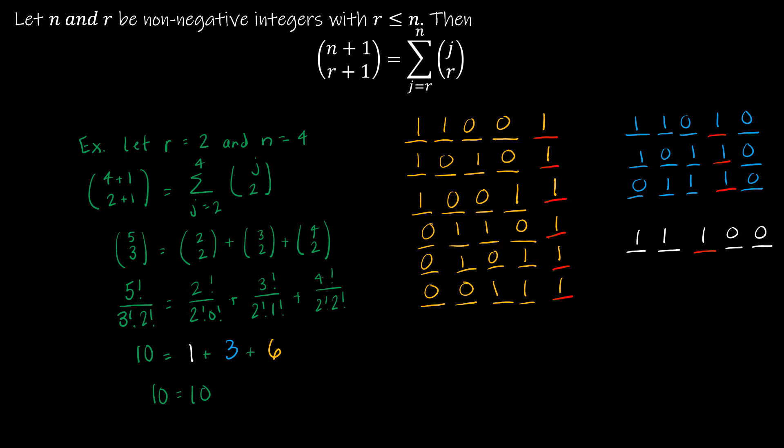For the second identity or last identity that it talks about in your textbook, again, I'm not going to go through the combinatorial proof because it does a great job in the textbook, well, it does a mediocre job in the textbook of going through the combinatorial proof.